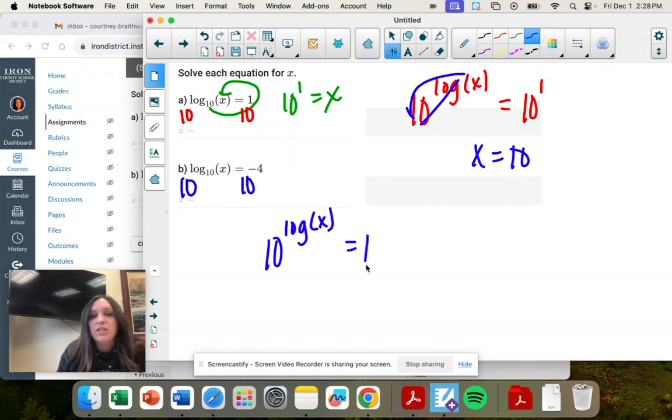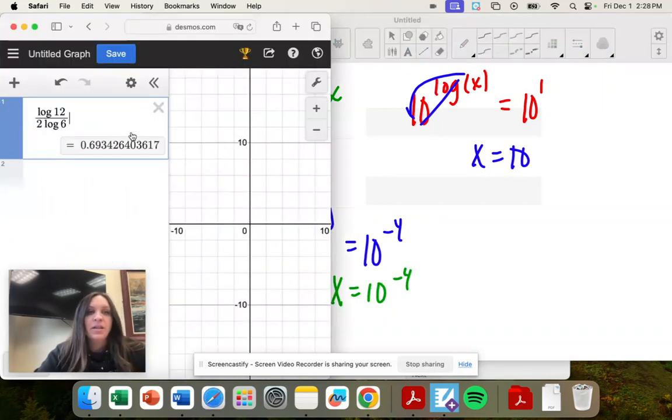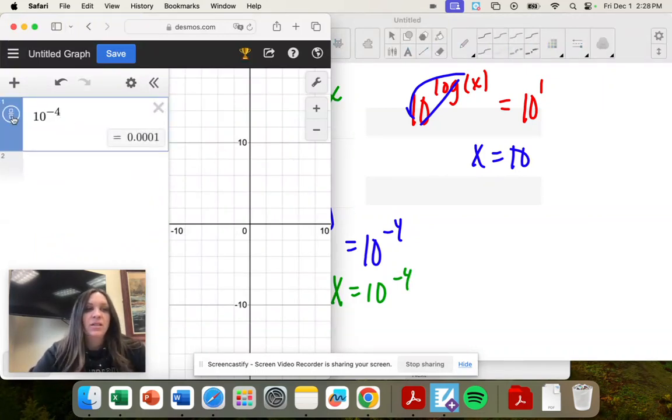You're left with just the argument, which is x equals 10 to the negative fourth. And 10 to the negative fourth is a fraction. It is 1 over 10,000.